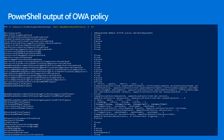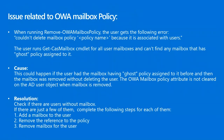A common issue related to OWA mailbox policy is when running Remove-OwaMailboxPolicy, the user gets the error: 'Couldn't delete the OWA mailbox policy because it's associated with a user.' This can happen if a user has a mailbox with a ghost policy assigned, and then the mailbox was removed without deleting the user, leaving the OWA mailbox policy attribute not cleared on the AD user object. To resolve, check if there are users without a mailbox, and if so: add a mailbox to the user, remove the policy reference, then remove the mailbox for the user.